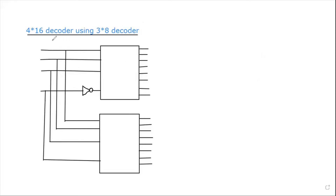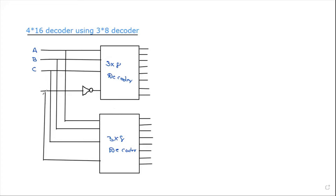Here we have two 3 by 8 decoders. The inputs are a, b, c for the first decoder, and the same inputs a, b, c go to the second decoder as well.